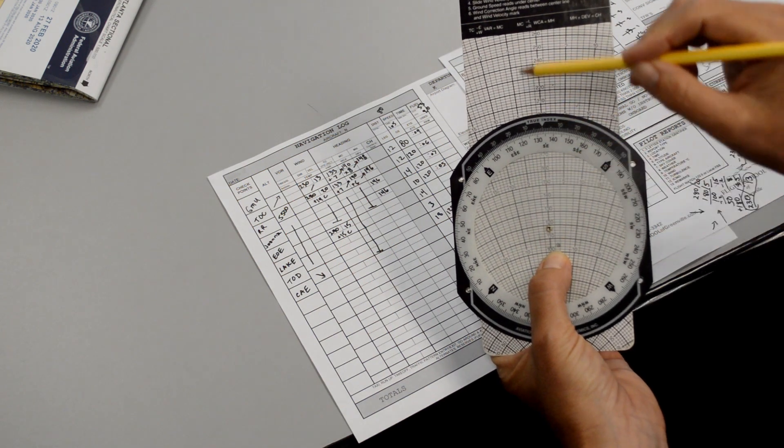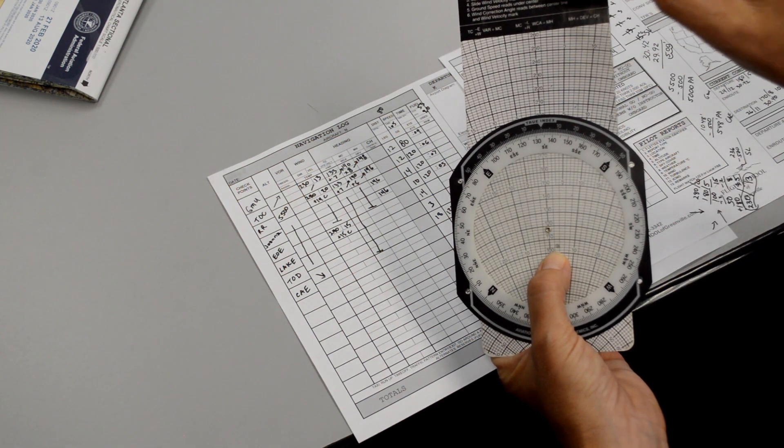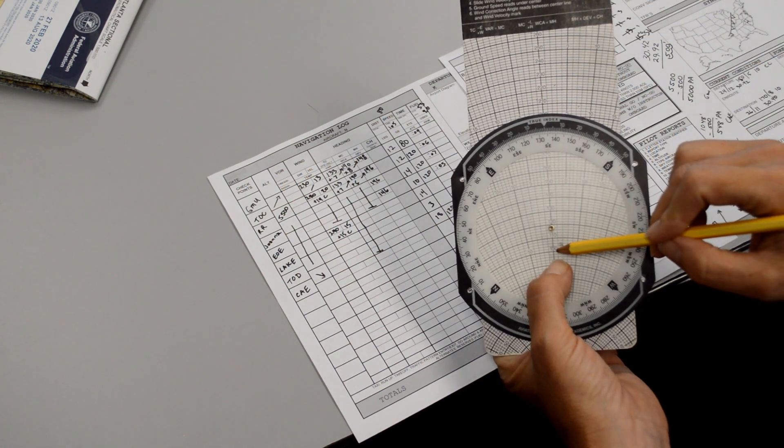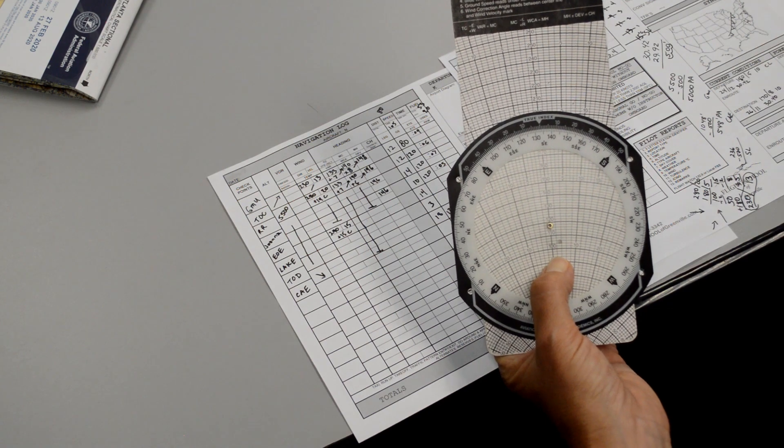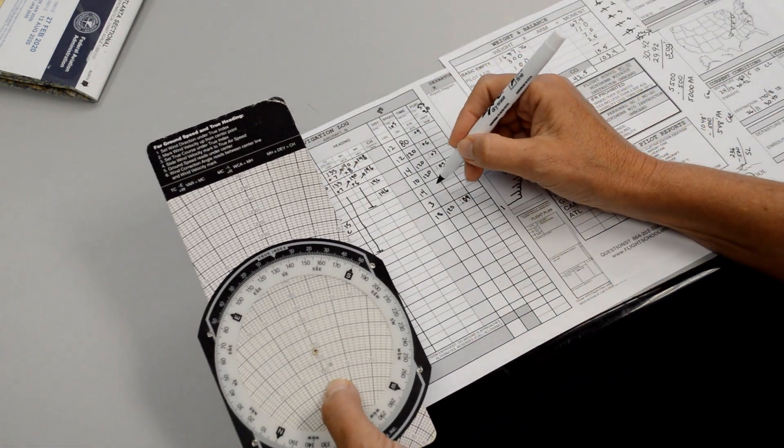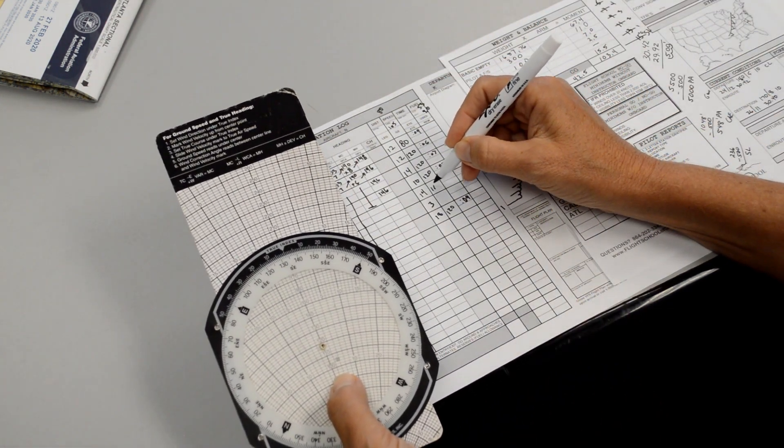Under the center grommet number 5 says that's where we find our ground speed. So it looks like we have 100, 110, about 118 knots. So we can fill that in on the speed. 118.